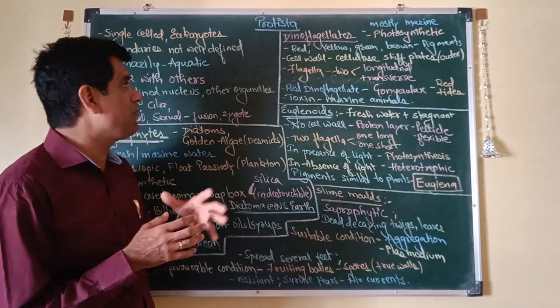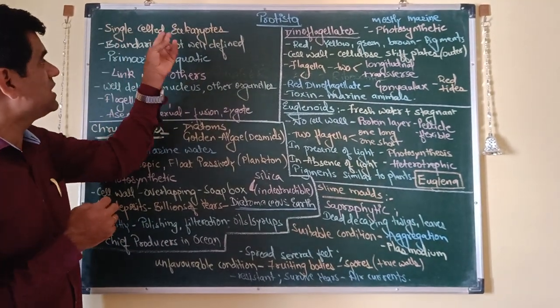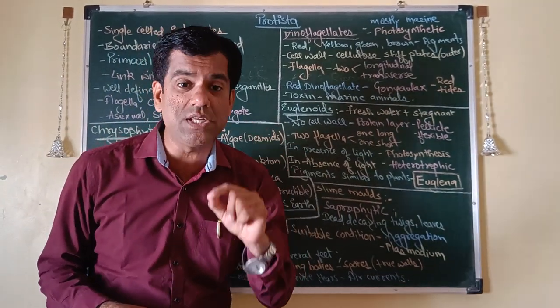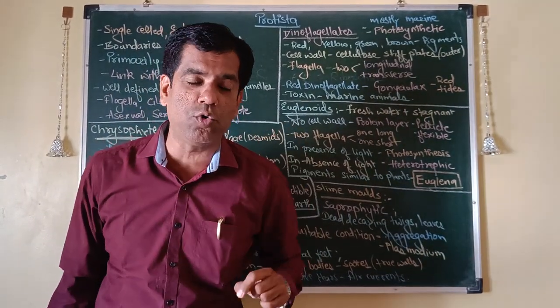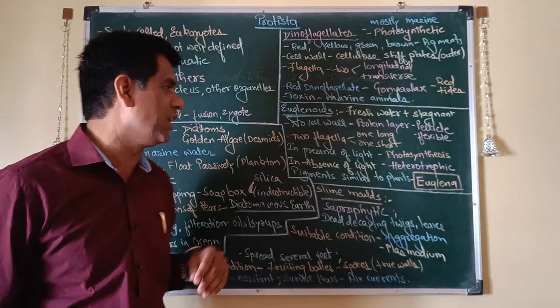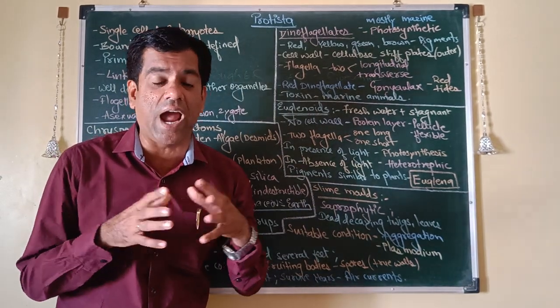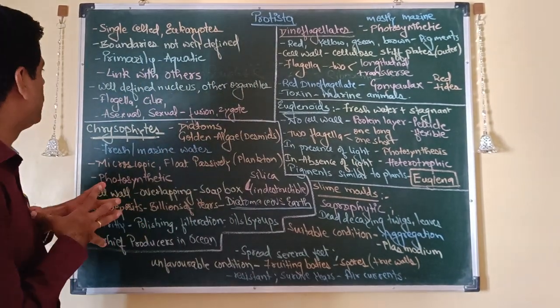Without wasting much time, these Protista are single-celled and eukaryotes. You have to remember that if it is unicellular and if it is a eukaryote, it is a Protista, without fail. Their boundaries are very ill-defined, but primarily you will find that they are aquatic, so you will find them a lot in water.